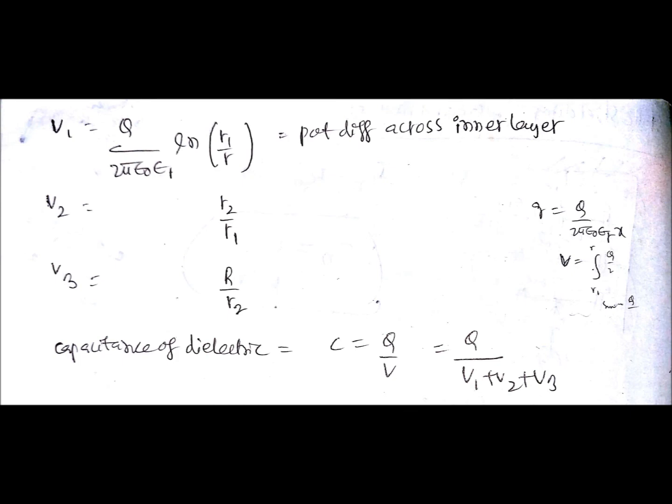The total dielectric capacitance will be c equals q by v, so it will be q divided by V1 plus V2 plus V3, because that is the total voltage. These V1, V2, V3 are the potential differences across each layer, so we need to add them for getting the series elements. The total voltage will be V1 plus V2 plus V3.